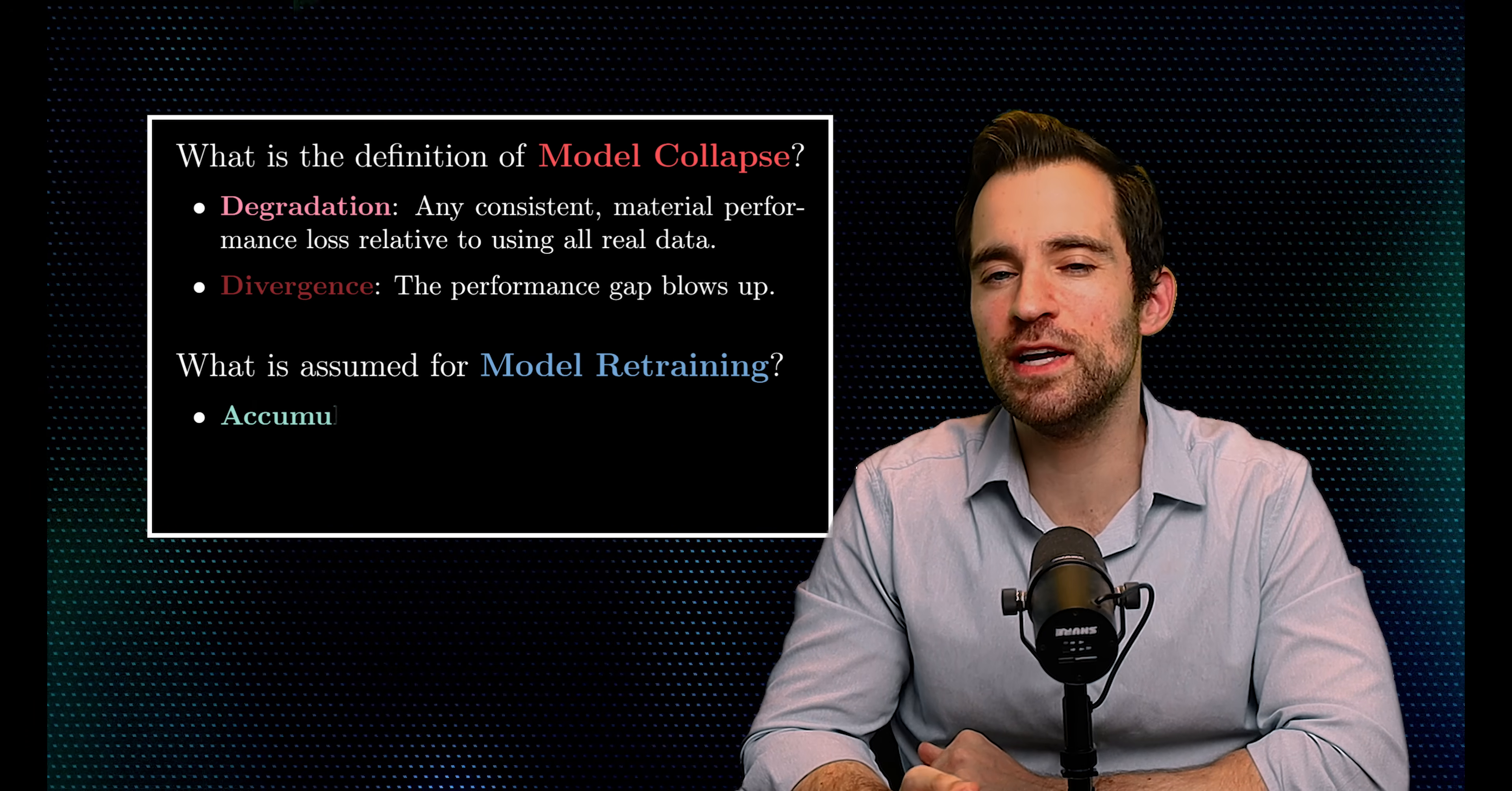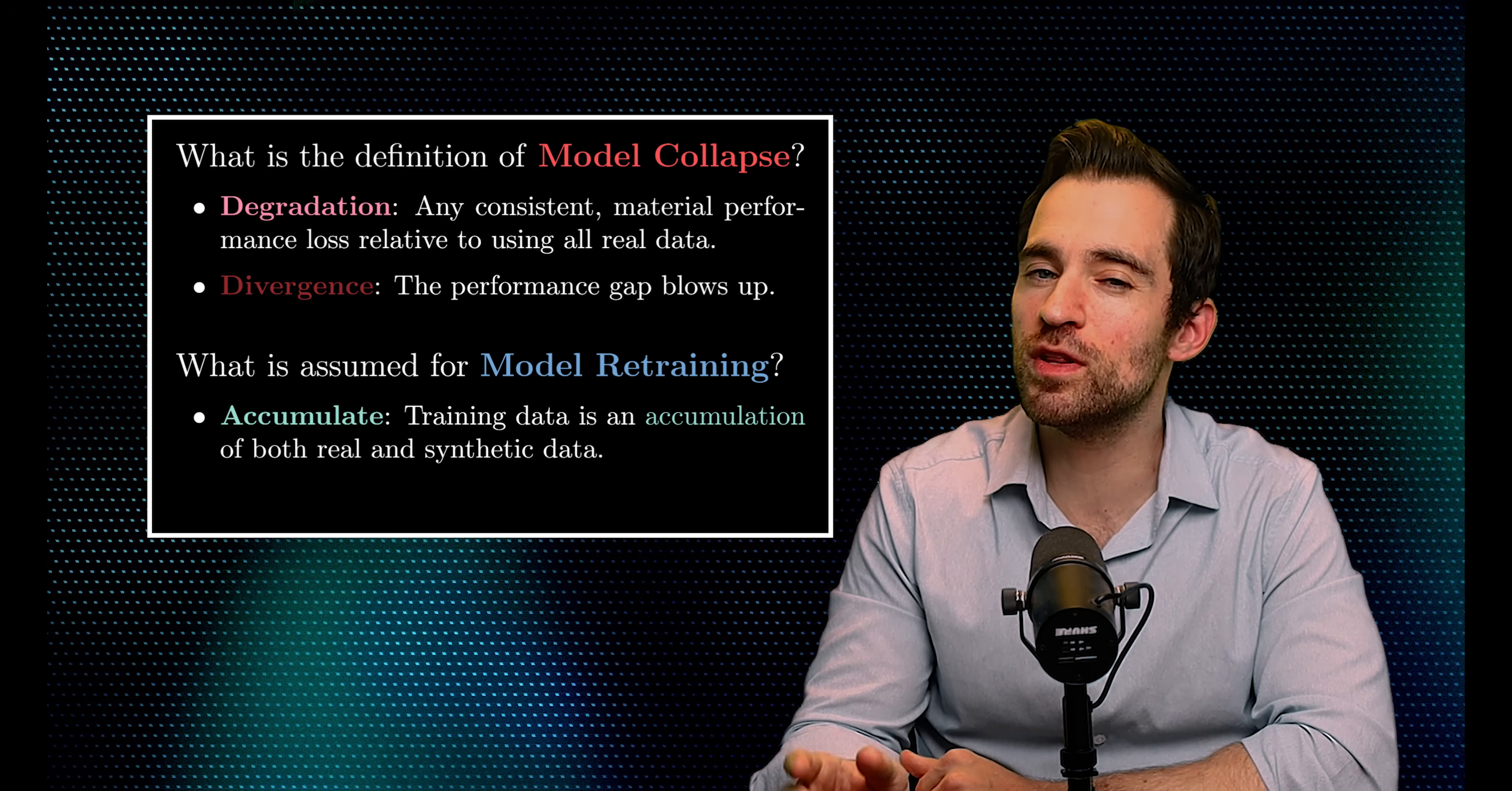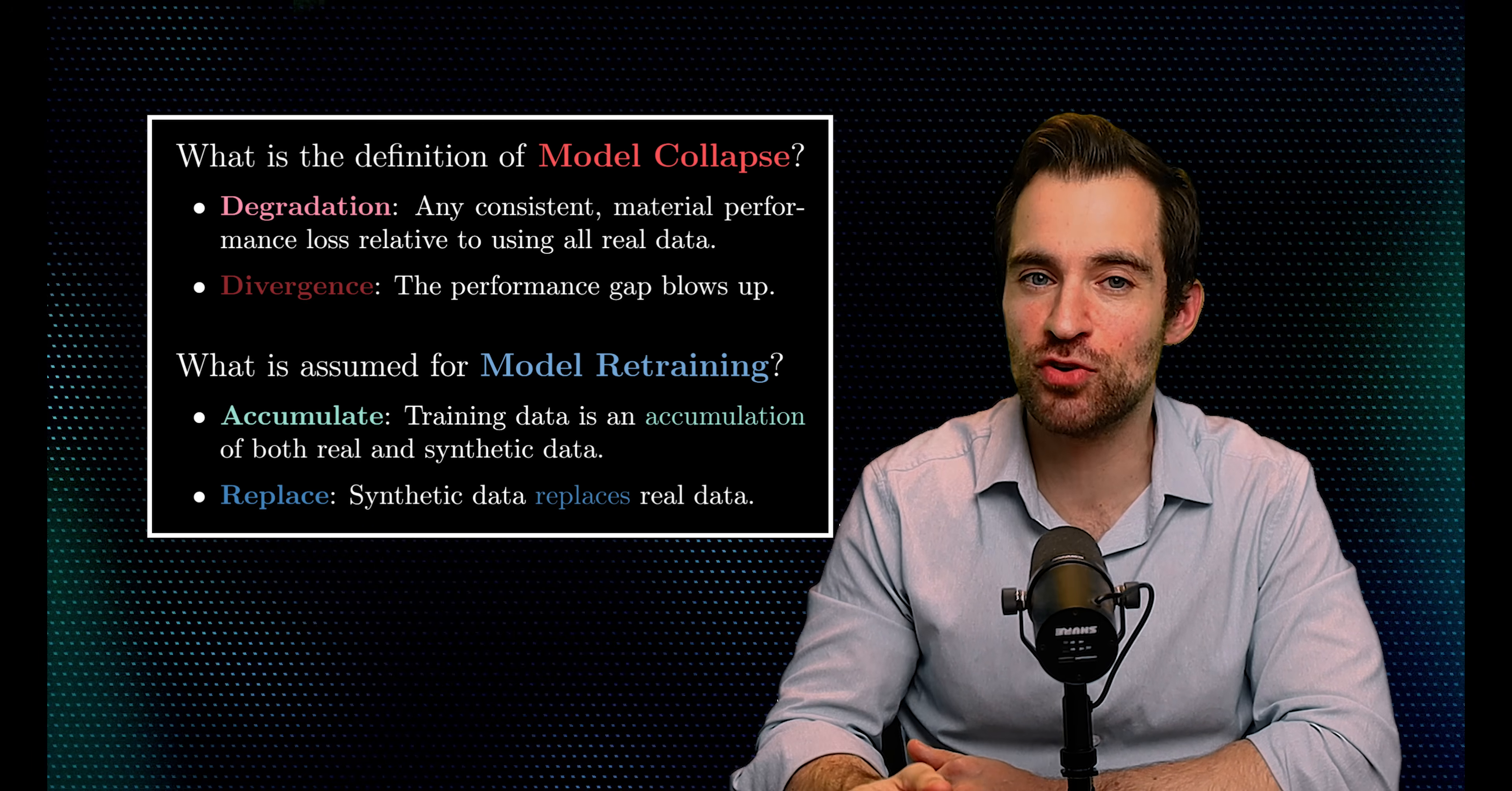One assumption is that of an accumulation process. That is, future training data is an accumulation of both real and synthetic data. That makes sense, but it assumes our training compute budget grows with the size of the internet. And that's not entirely reasonable. So the fixed compute budget alternative is to replace, where synthetic data replaces real data in the training data.